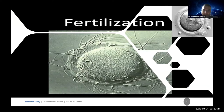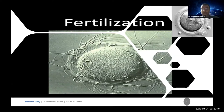Fertilization by definition is a sequence of biological processes initiated by entry of a spermatozoid into a mature oocyte, followed by formation of pronuclei. Successful fertilization requires oocyte activation, which depends on interaction between the gametes.